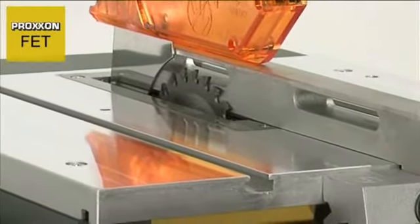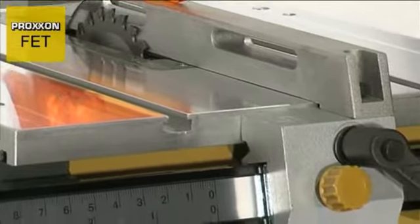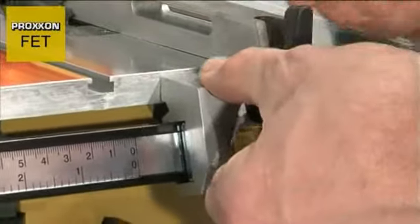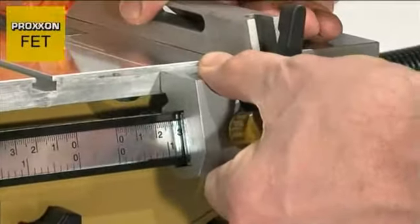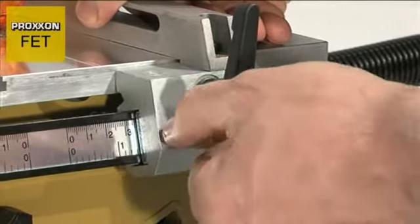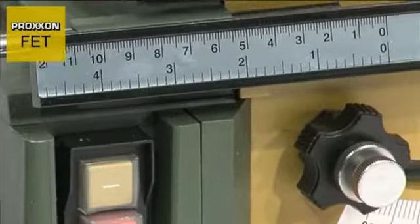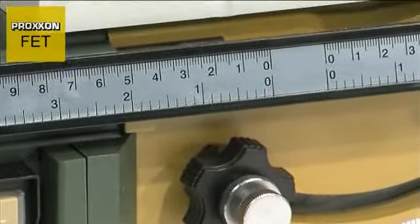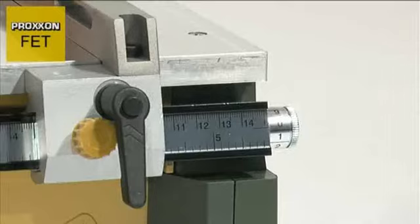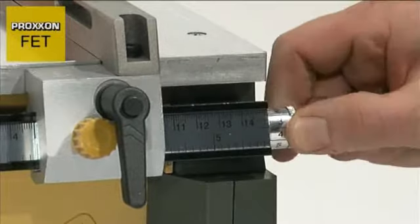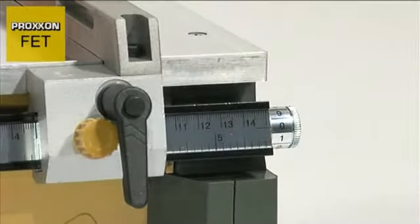Decisive advantages are also gained through the finely adjustable, precise and stable longitudinal stop. When the work in hand is not so precise, it can be simply pushed into the desired position and secured with a tommy screw. The clearly legible scale is helpful in this case. And for very accurate work, the position of the longitudinal stop can be corrected by one-tenth of a millimetre.